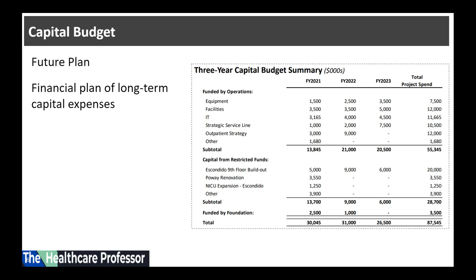Now, what is a capital budget? A capital budget is a future financial plan intended to be implemented over a time frame. It is a financial plan that lists a hospital's expected long-term capital expenses and the amount of money allocated for funding capital asset purchases.